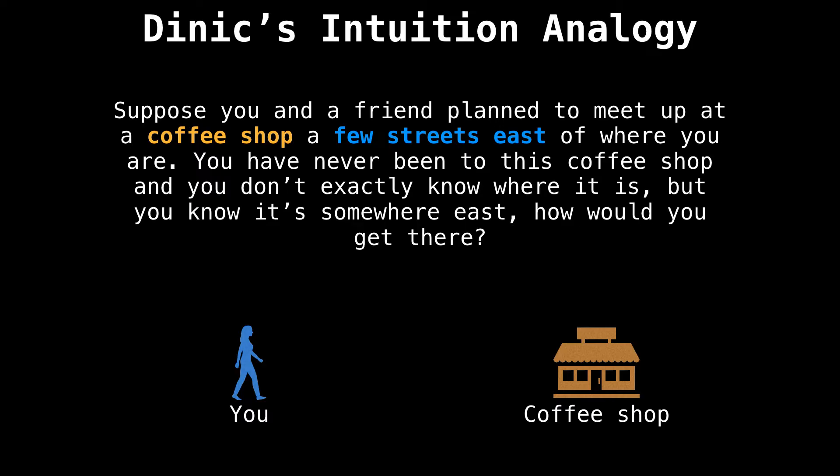Let's start by talking about the algorithm itself. But first beginning with an analogy. Suppose you and a friend planned to meet up at a coffee shop a few streets east of where you are. You have never been to this coffee shop and you don't exactly know where it is, but you know it's somewhere east. How would you get there?